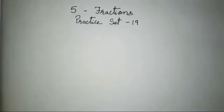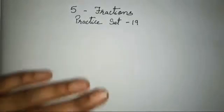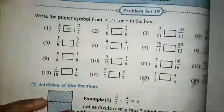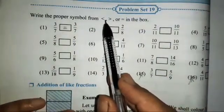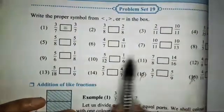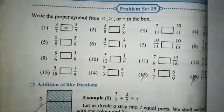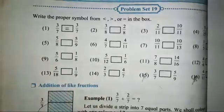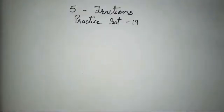Hello everyone, today we are going to study chapter number 5, fractions practice set number 19 in today's video. We are going to learn about the symbols — greater, smaller, or equal to — in order to show which fraction is greater, smaller, or which fractions are equal. This exercise is very easy, children, and we will make it even more easier.